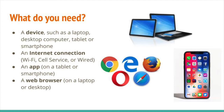An internet connection could also be through a cell service — you may pay Verizon, AT&T, or T-Mobile for your cell service, which is another way to get internet to your device. Finally, it could be a wired connection, a direct cord plugged into the computer that gives you internet there.